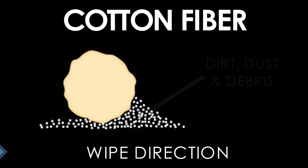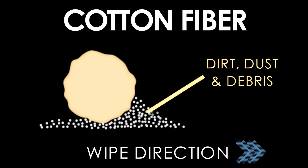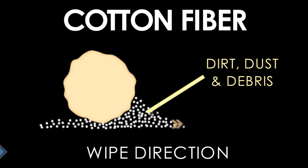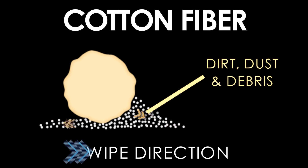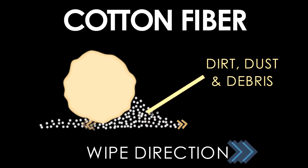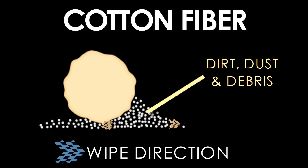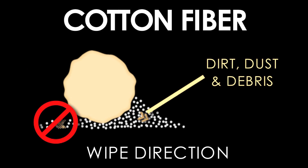Of course, to kill the bacteria you will need to wash your towels or use a silver-infused towel. Meanwhile, the circle shape of cotton only serves to push around surface contaminants, resulting in a streaky finish — not to mention the potential for scarring, marring, or scratching — and you end up leaving a lot of the bacteria behind.